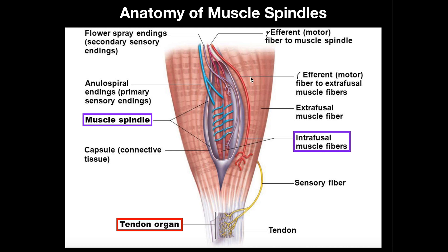A few terms here. The actual muscle fibers that we normally think of as contracting — that generate force when we work out at the gym — are called extrafusal muscle fibers. However, embedded within the extrafusal muscle fibers, normally deep, we have the muscle spindle. And within the muscle spindle, we have intrafusal muscle fibers. These intrafusal muscle fibers are going to be surrounded by the sensory nerve endings, which comprise the muscle spindle.